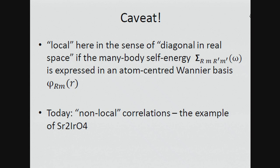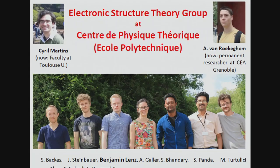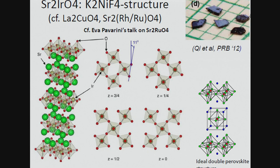Today's topic will be an example where this is clearly not enough — namely where we need non-local correlations and must introduce inter-site, inter-atomic components of the self-energy. These turn out to be important in the example I will show you: strontium iridate. My outline is to give a short introduction into the physics of strontium iridate and related compounds, then show what single-site DMFT gives — the purely local self-energy approximation — and where and why it's not enough. Then we will go beyond and see what non-local self-energies introduce. Finally, I will discuss the doped case and a simple picture of what experimentalists call the pseudogap. This work is by a former student of mine, Cyril Martins, and postdoc Benjamin Lenz.